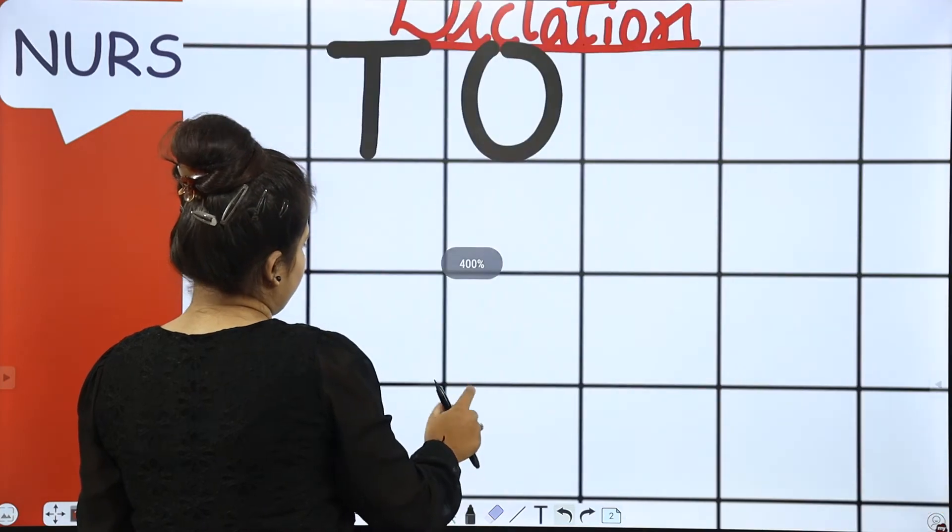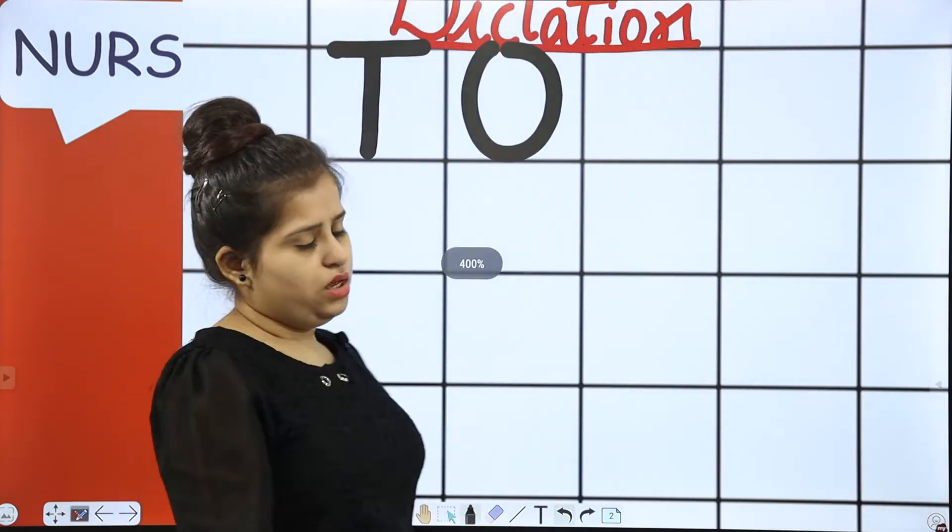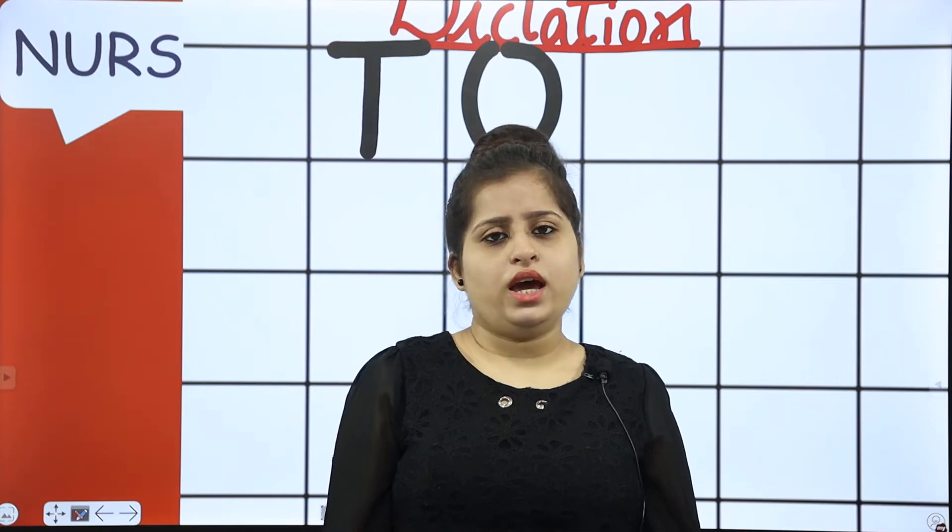So let's start with the very first number that is the number that comes after 79. 79. Yes, where are counting change? 80. You are going to write number 80. Okay?